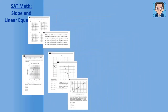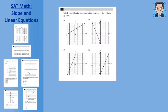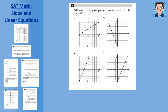SAT problem 1: Which graph represents y = 2x − 5? The slope is two and the y-intercept is negative five. Two of the answer choices don't have a y-intercept of negative five, so they're eliminated. Of the remaining two, one has a negative slope (going down) and one has a positive slope. Since slope is positive two, the answer is D. We can verify: going up two over one confirms a slope of two.